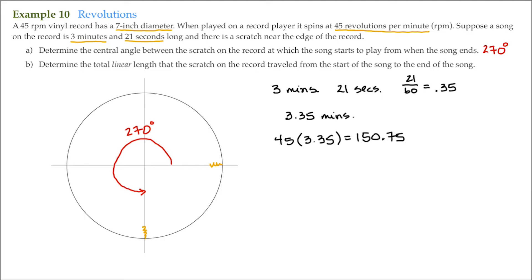Now for B, it says determine the total linear length that the scratch on the record traveled from the start of the song to the end of the song. So maybe you could imagine that if you took the record and stood it on its edge and then rolled it along the floor at 45 revolutions per minute for 3.35 minutes, how far along the floor would you have traveled?